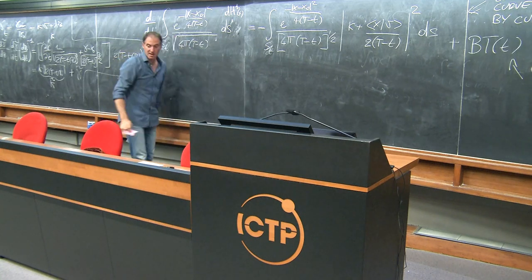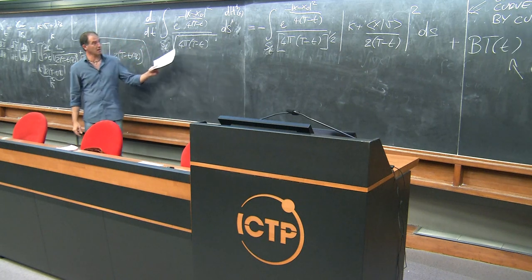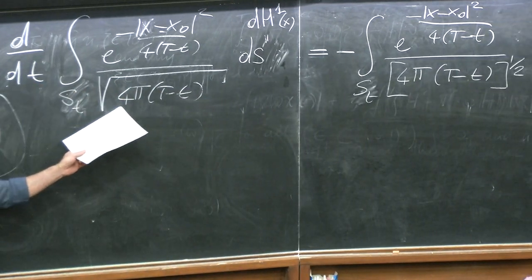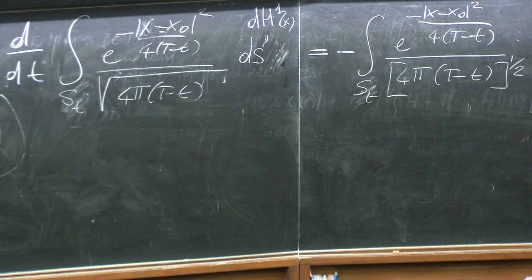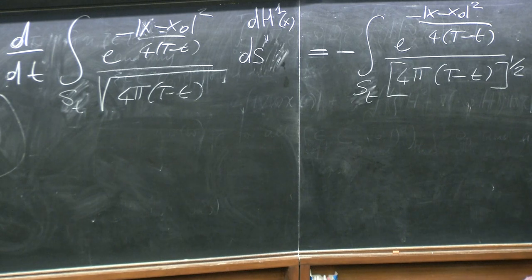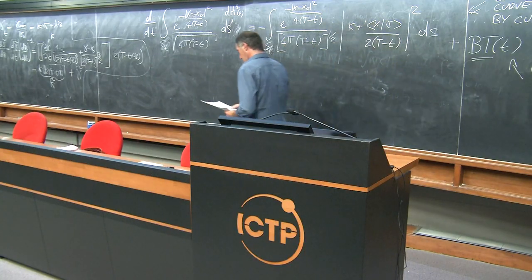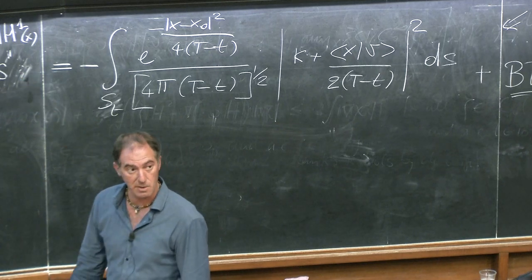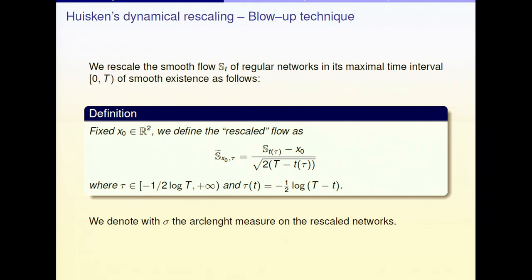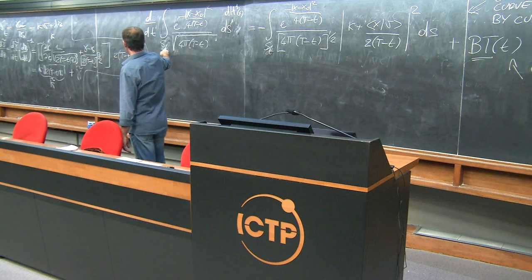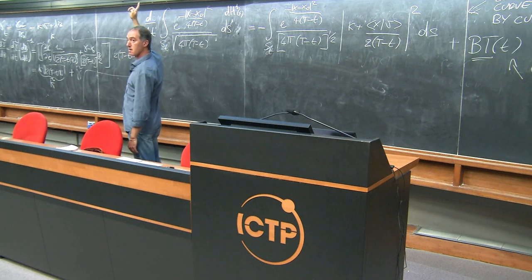So we have a monotonicity formula, though we still call it that. Without the boundary terms the squared term is clearly non-positive, so this quantity is decreasing during the flow. With the boundary terms, this quantity is no more monotone in general. But we can still use this formula. These boundary terms can be computed; the exact form can be found in the survey and paper uploaded for the lecture.